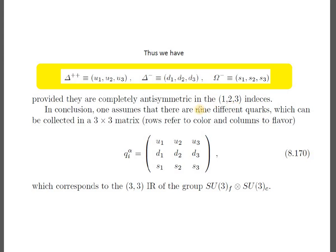In conclusion, we assume there are nine different quarks which can be collected in a 3×3 matrix, where the rows refer to color and the columns refer to flavor: u1, u2, u3 through s1, s2, s3. This corresponds to the (3, 3) irreducible representation of the SU(3)_flavor × SU(3)_color group.